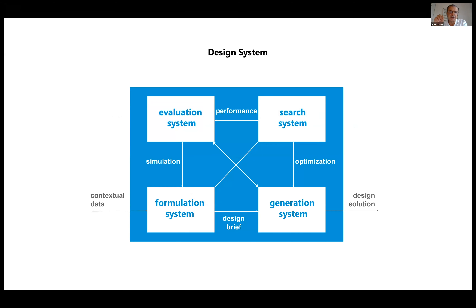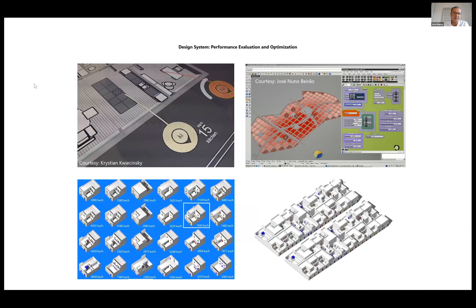Going deeper into the design system, we have four subsystems: a formulation system that reads the context and generates a design brief; a generative system that takes the design brief and generates candidate solutions; an evaluation system that uses simulation and analysis tools to rate and rank the solutions; and a search system to do the optimization — finding the solution that most closely fits the design context.